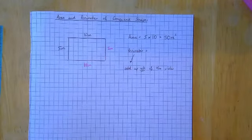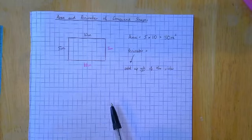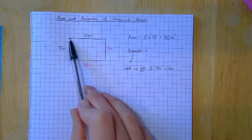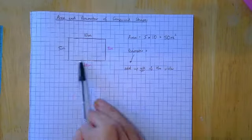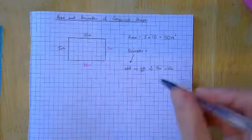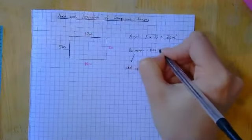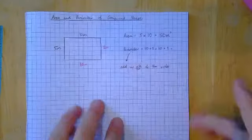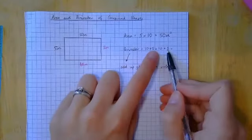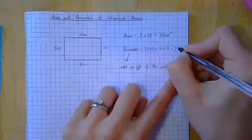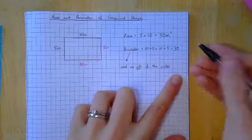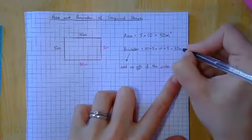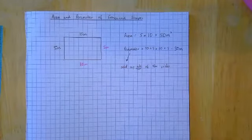My maths teacher used to say, whenever she said perimeter, we had to say ant. We had to pretend to be an ant that was going to walk all the way around the shape. So 10, add 5, add 10, add 5. Which is 10 add 10 is 20, 5 add 5 is 10, so that's 30. And I haven't multiplied any of my metres, so I'm still just in metres.